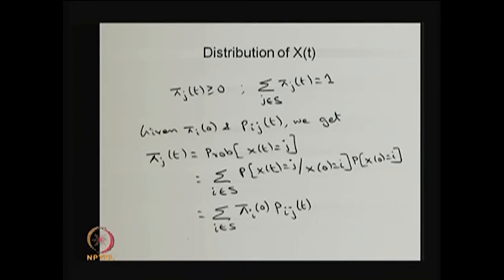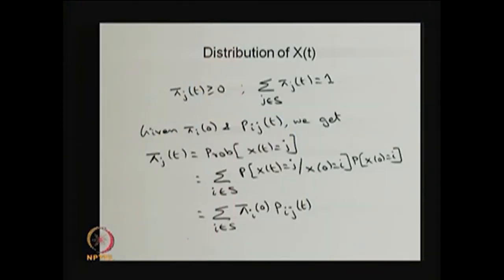So to find the distribution of X(t) for any time t, I need the initial state probability vector as well as the transition probability of the system moving from one state to other states. The initial state probability vector is usually given, so what we want to find is pᵢⱼ(t). How to find pᵢⱼ(t) — that derivation I am going to do in the next few slides.